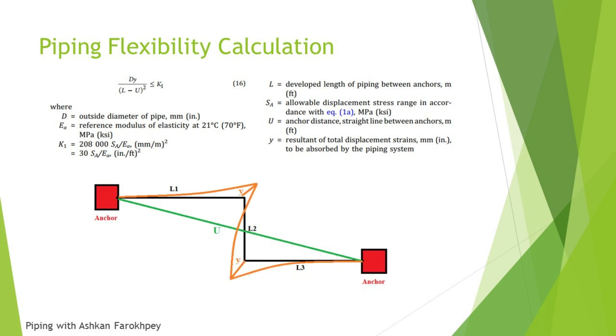In this condition, if your system takes a new shape like the orange one because of the thermal movements, because of the thermal expansion that your system has, you can calculate the maximum allowable Y, which is in direct relationship with your SA or allowable displacement stress range of your system, of your material.